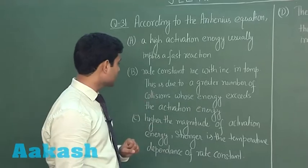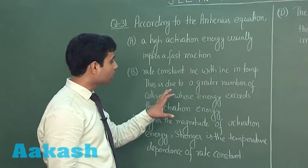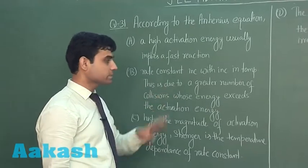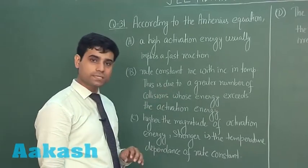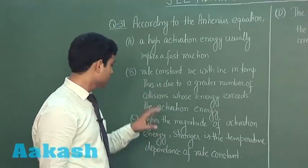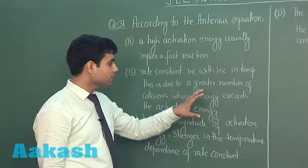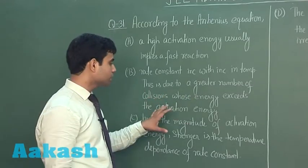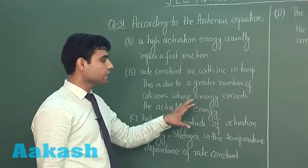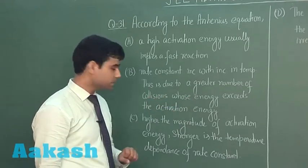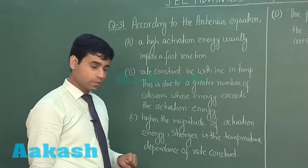The second option says the rate constant increases with increase in temperature. This is due to a greater number of collisions whose energy exceeds the activation energy.